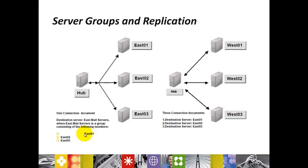If you see these server groups and replication in this figure, we have a hub server and different types of servers installed in different locations. So for all these servers we have created only one connection document.